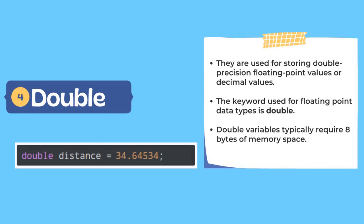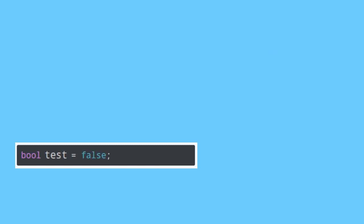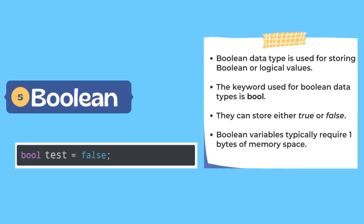The fourth primary data type is double. While float stores single precision floating values with up to seven decimal digits, double stores double precision floating values with up to fourteen decimal digits. The keyword used is double. Since it is double precision, it takes double the memory of float — so while float takes four bytes, double takes eight bytes.